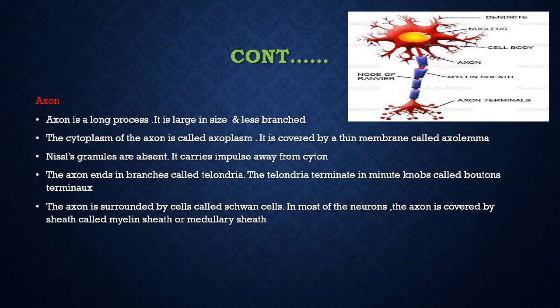At the end of the Telodendria, there are many minute knob-like structures called Button Terminaux. One more important thing regarding Axon is it will be covered by a special kind of cell called Schwann cell. Where the Axon is covered by a myelin sheath, it is said to be myelinated neuron. If it does not contain any myelin sheath, then the Axon is said to be non-myelinated neuron.